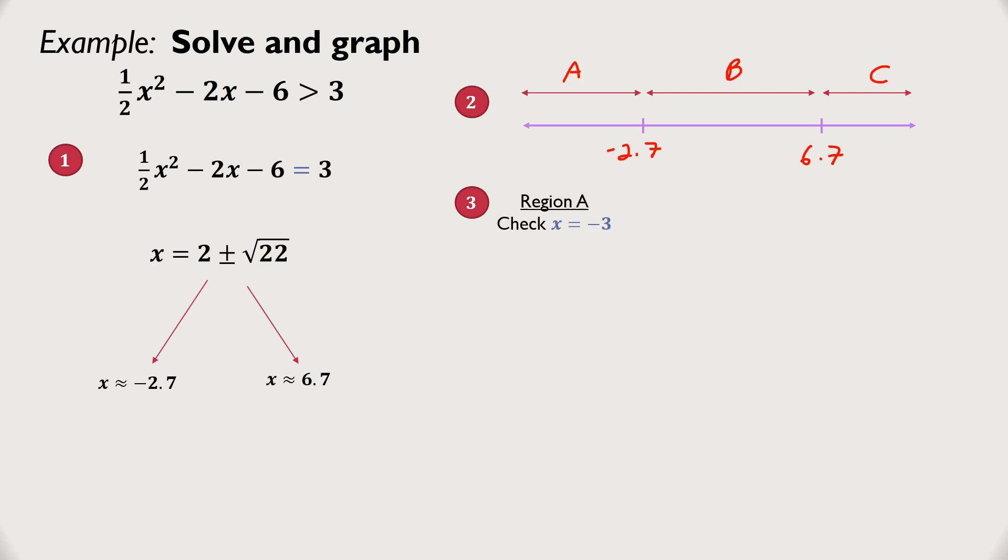Now we have to pick a number from each region to substitute back into the inequality. We're testing the values. For region A, I'm going to use negative 3. Region B, 0. It's easiest to work with usually. Region C, I'm going to go a little more than 6.7, so I pick 7. Then we just substitute it into the original inequality. On the left side, I get that 4.5 is greater than 3. That's true.